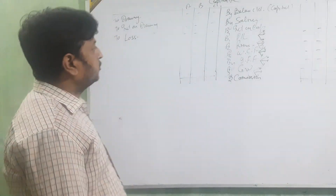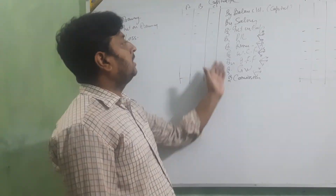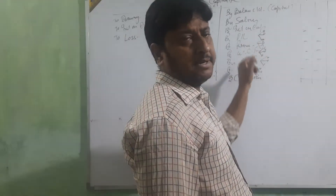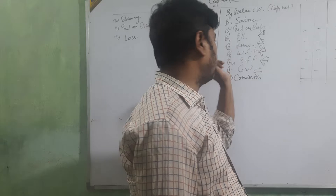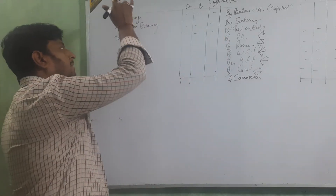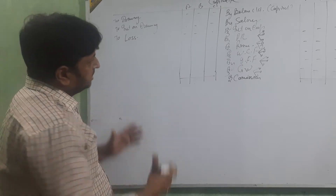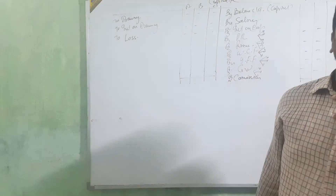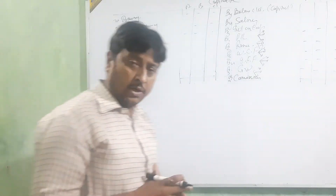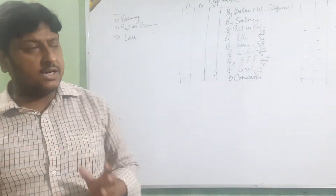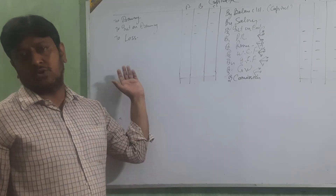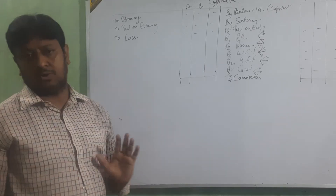If capital is fluctuating, then we are going to make only the capital account. In this capital account, on the credit side we show: balance, salary, interest on capital, commission, any type of profit, any type of reserve, workman compensation fund, investment fluctuating fund, and goodwill. Drawing, interest on drawing, and loss we show on the debit side. The logic is: what things are received by the partners are shown on the credit side, and what things are paid by the partners are shown on the debit side.